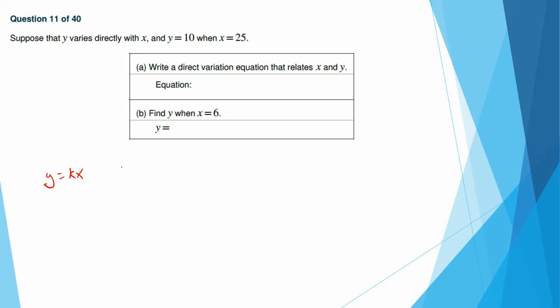Remember, this is direct. If it were inversely, it would be k over x, right? So this one is kx. And we're given that when y equals 10, or y equals 10, when x equals 25. So if I divide both sides by 25, I get k equals 2 fifths. So that means y equals 2 fifths x. kx.